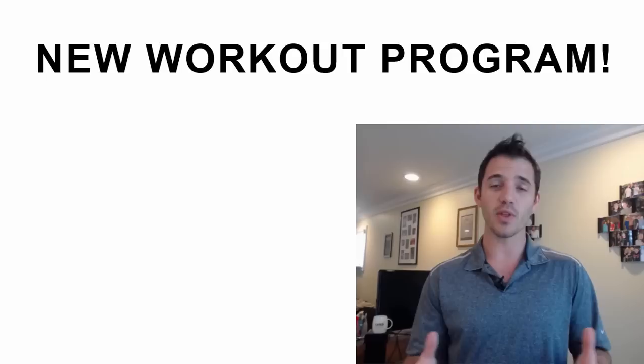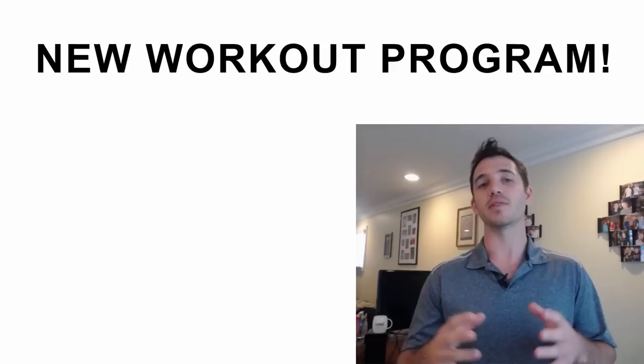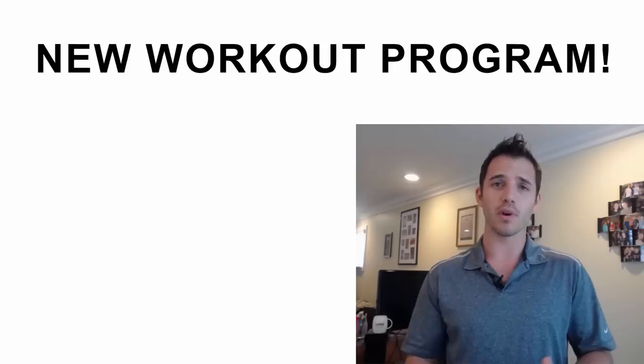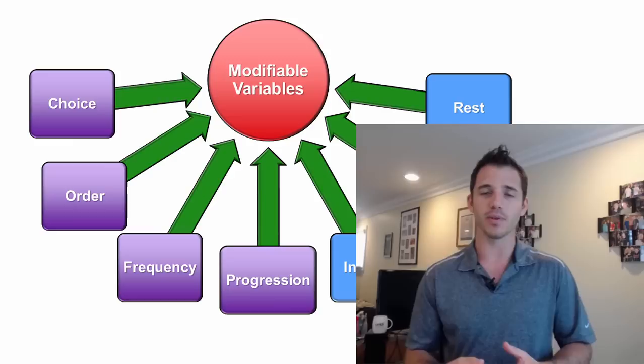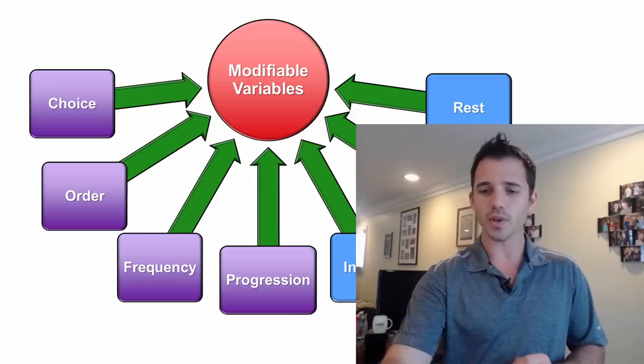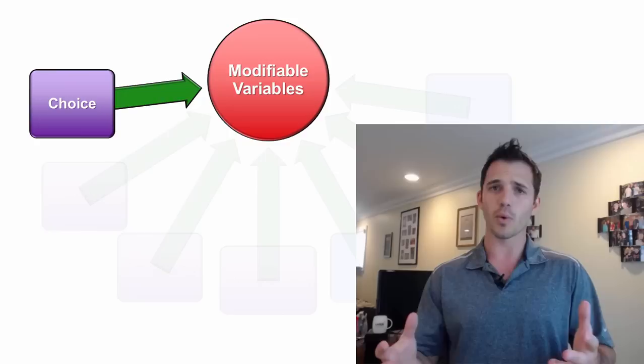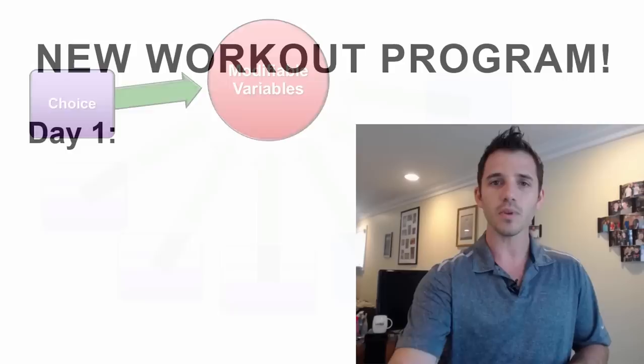Welcome back to 25-Minute Phys. Today we're talking about exercise programming — in other words, putting together workout programs. We talked in the 5-Minute Phys section about the 7 modifiable variables. So when you're deciding to write a new workout program for yourself or for a client, what are the things you can change that would alter the adaptation or the result you get out of your plan? In this particular talk, we want to focus on that first modifiable variable, which is exercise choice — also known as exercise selection.